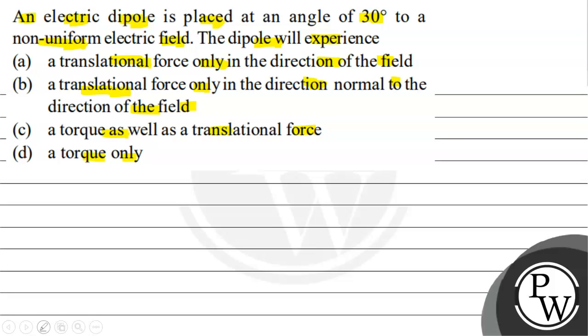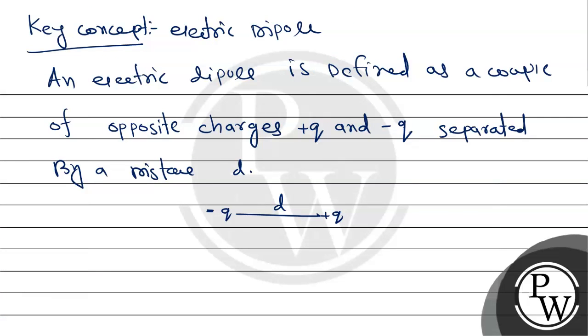The key concept here is electric dipole. An electric dipole is defined as a couple of opposite charges plus Q and minus Q separated by distance D. Here we have a minus Q charge and at a distance, a plus Q charge. This system of charges is an electric dipole.